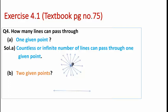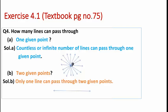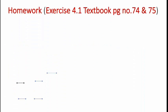Next, how many lines can pass through two given points? Only one line can pass through two given points. Looking at the figure, we have taken two points A and B, and you can see that only one line can pass through them.